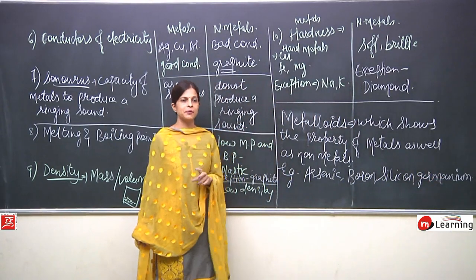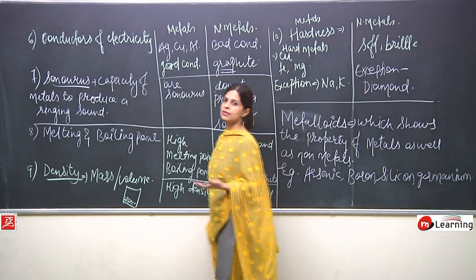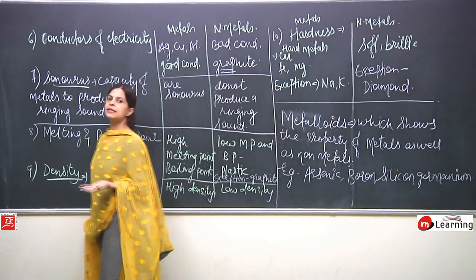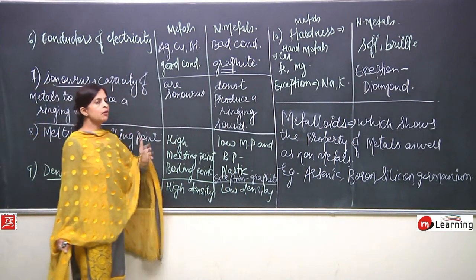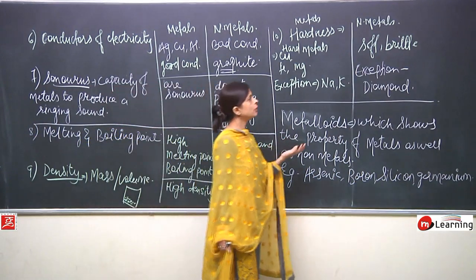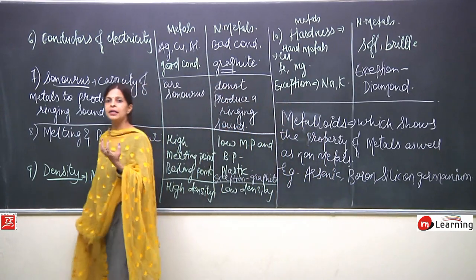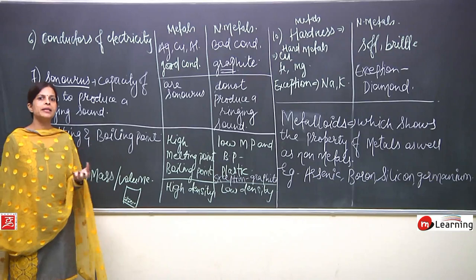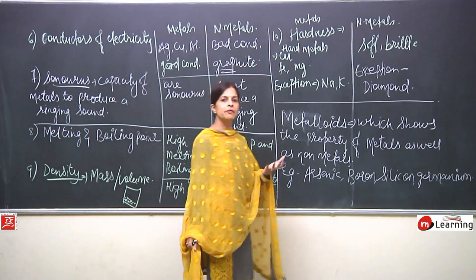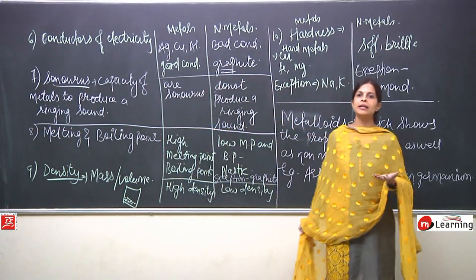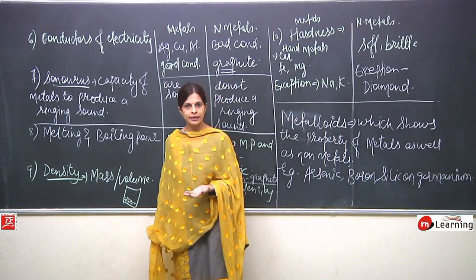We also discussed that matter can exist in the form of elements, compounds, and mixtures. Compounds are formed when elements combine in a fixed proportion. When elements or compounds combine in an indefinite proportion, mixtures are formed. Thank you.